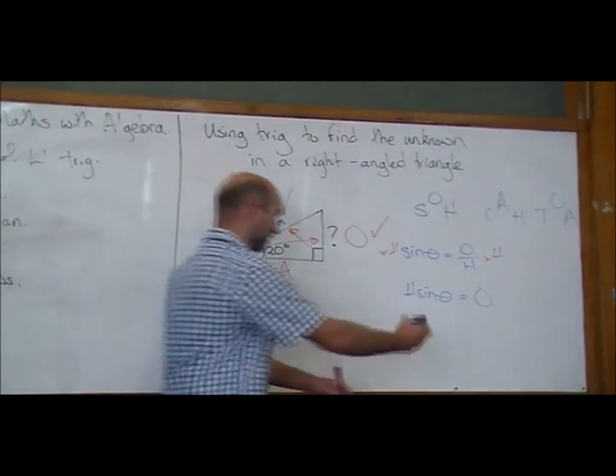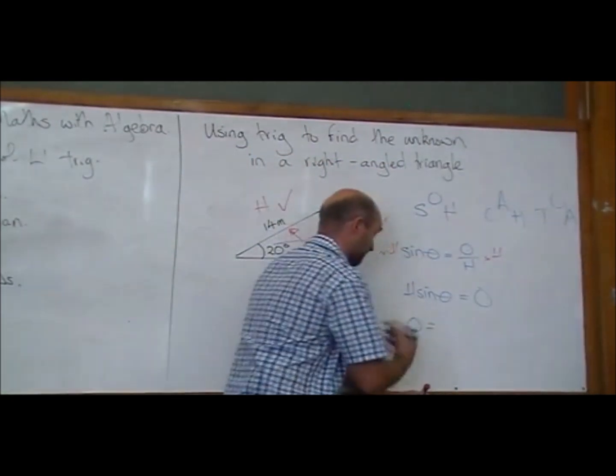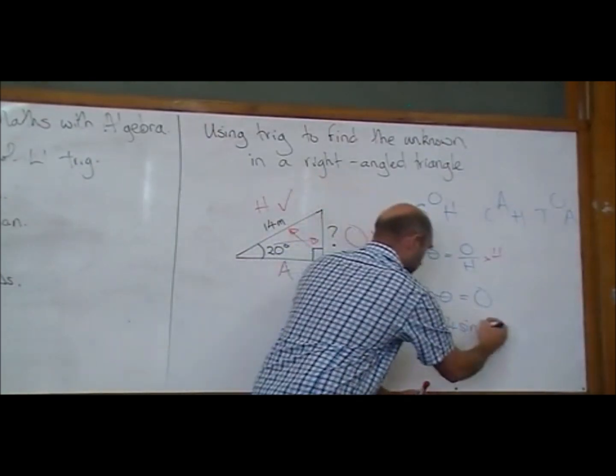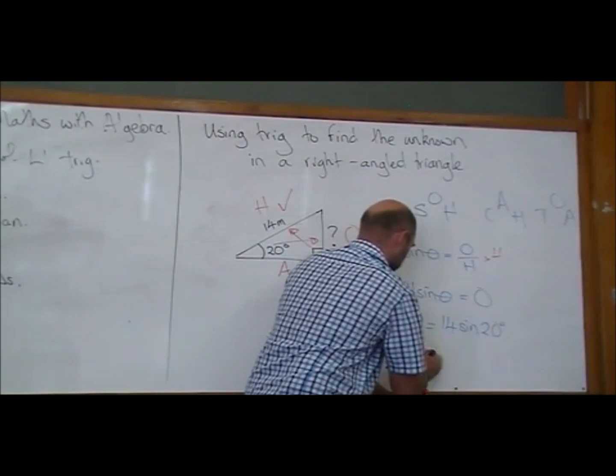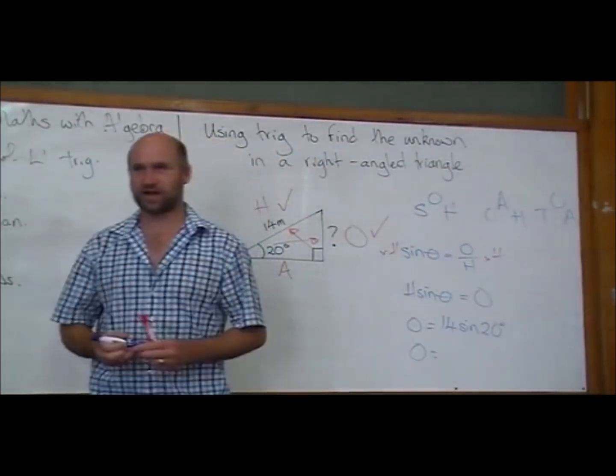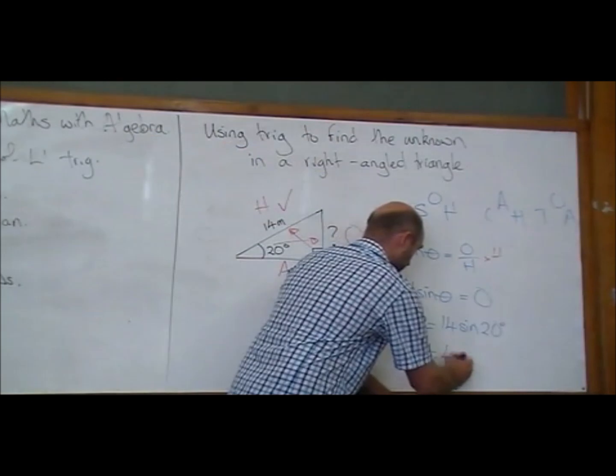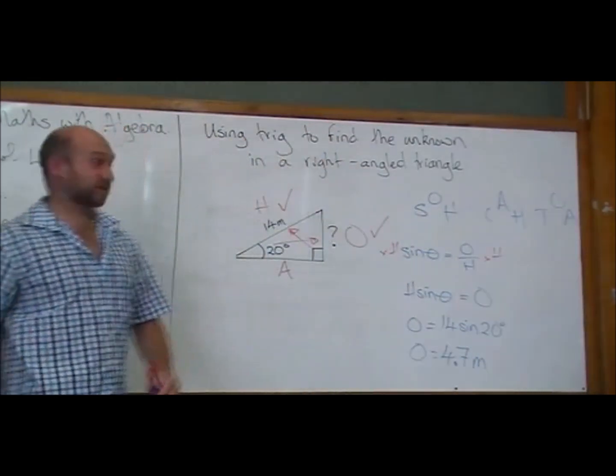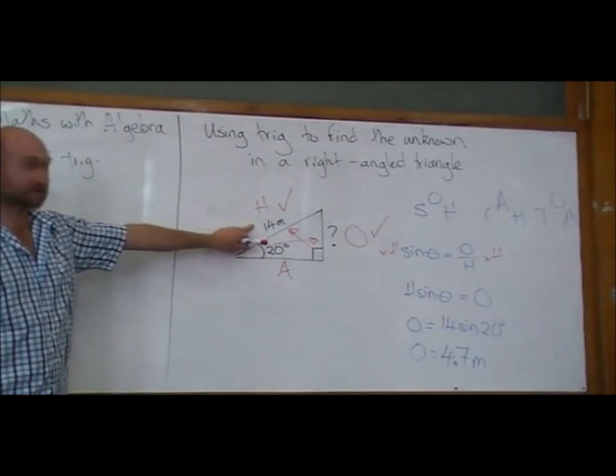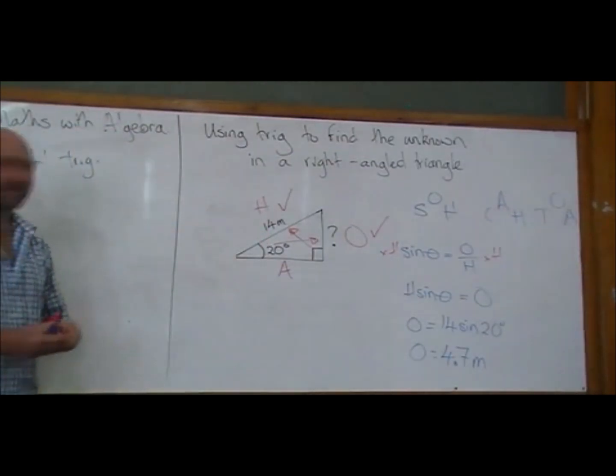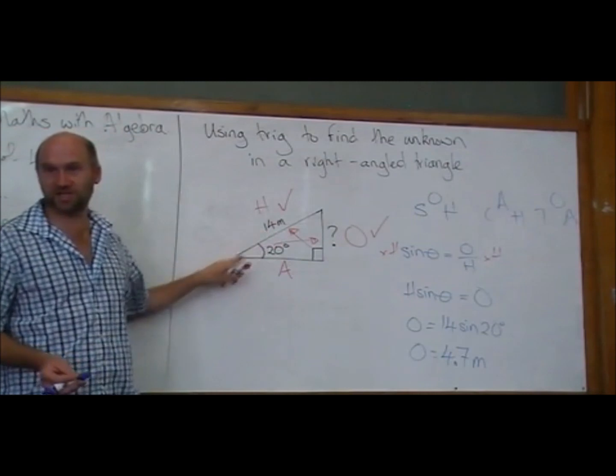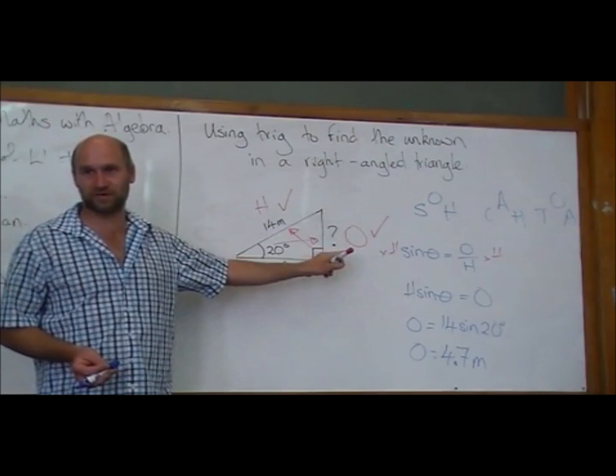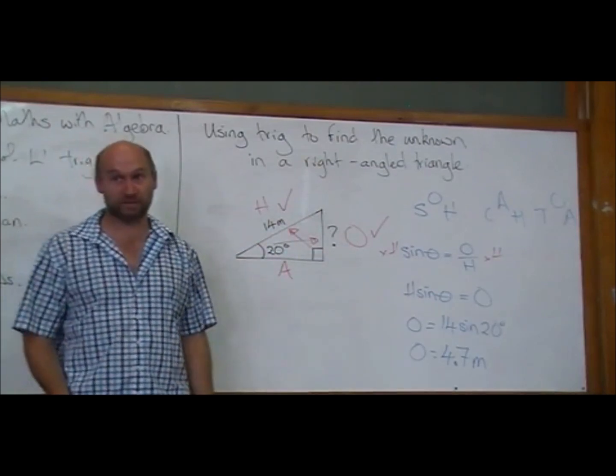We can plug some numbers in. So O, just going to write it the other way around, equals 14 sine 20. Who's got a calculator? 4.7. 4.7. We're going to give it a unit metres because we had unit metres here. So 4.7 metres. Does it look about right? Yeah, it looks about right. If that side's meant to be 14, then we can believe that that one there is around about 5. Seems legit. So we're happy with that.